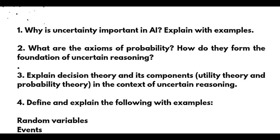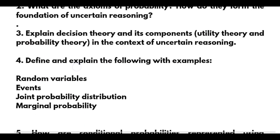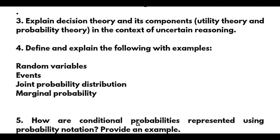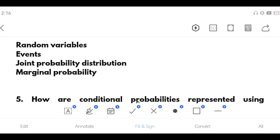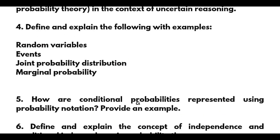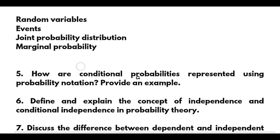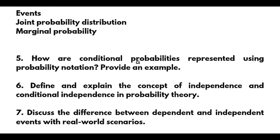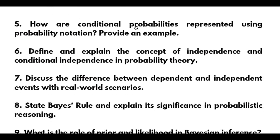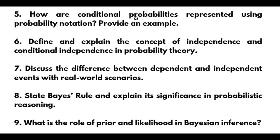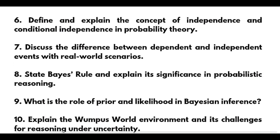Define and explain with examples: random variables, events, joint probability distribution, and marginal probability. Also explain how conditional probabilities are represented using probability notation. Define and explain independence and conditional independence in probability theory, and discuss the difference between dependent and independent events with real-world scenarios.